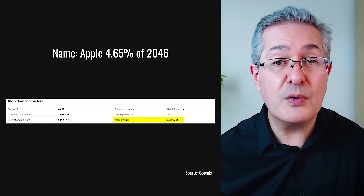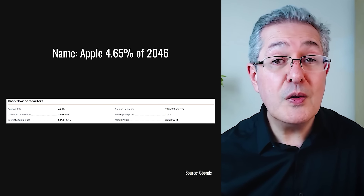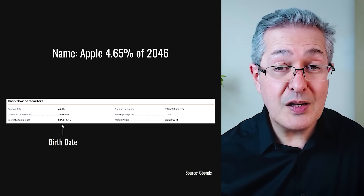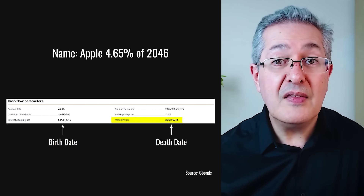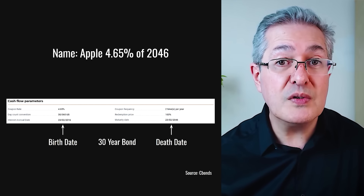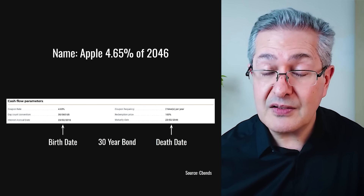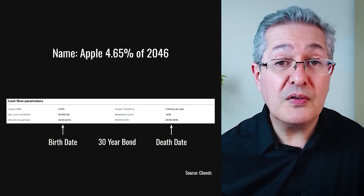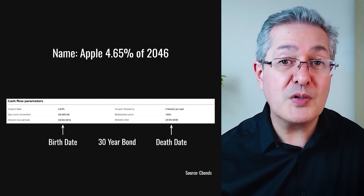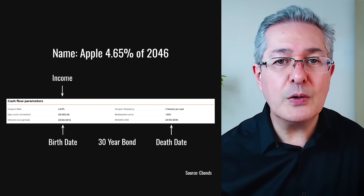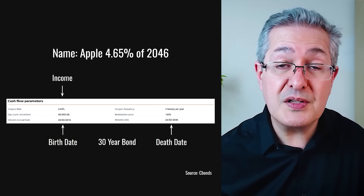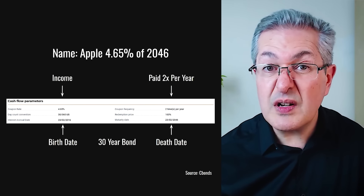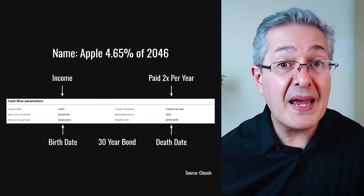The maturity date of 2046 is when you receive your principal back. Like a human, a bond has a birth date — in this case February 2016 — and unlike a human we know its precise death date, its maturity date, which is February 2046, making it a 30-year bond when issued. The income is fixed at 4.65%, but the actual yield to maturity depends on the price you pay today. This bond is currently trading at about $91, so you'll get some capital gain up to $100 at maturity plus that 4.65% income, and the yield to maturity accounts for both. Income is usually paid semi-annually for a US corporate bond.